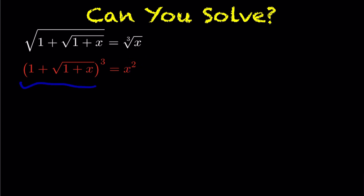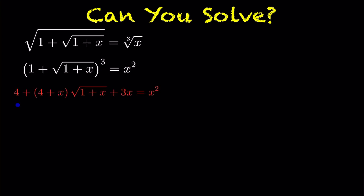We're going to expand out and simplify the left hand side, which results in: four plus four plus x times the root of (1+x) plus three x, equal to x squared.